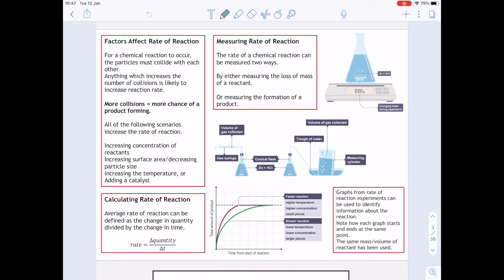So we'll start on the left hand side at the top. As I say, for a chemical reaction to occur, particles must collide with each other. And then anything that increases the number of collisions is likely to increase the reaction rate. So all of this can happen with four different ways: you increase the concentration of your reactants, you can increase the surface area or decrease the particle size, you can increase the temperature, and you can add a catalyst.